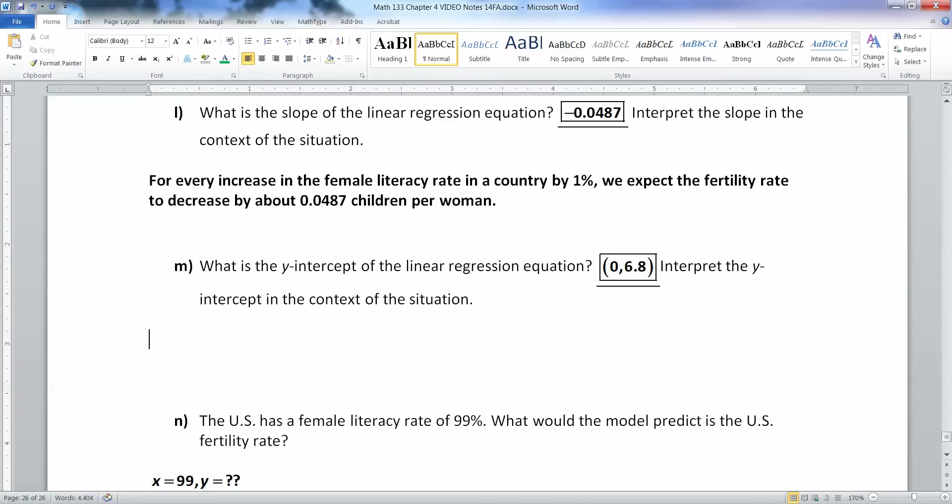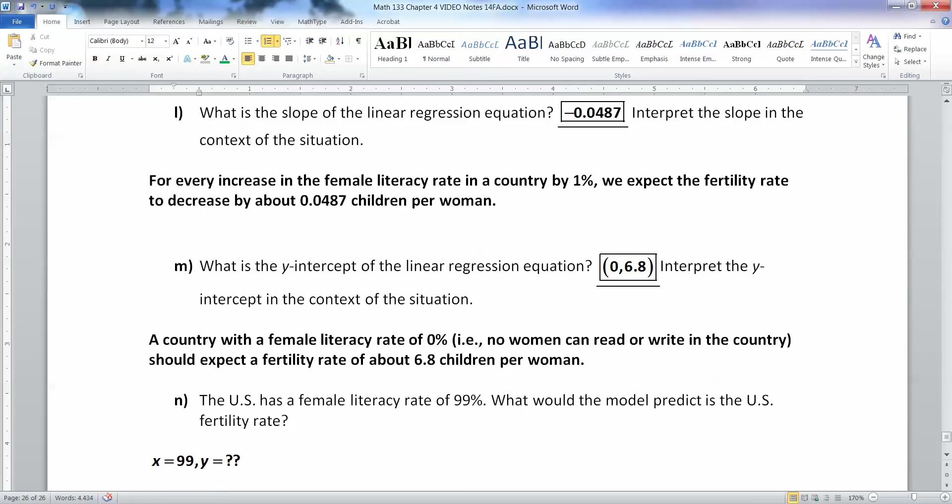Alright, now what about the y-intercept? That's saying that a country that has zero female literacy rate, so a female literacy rate of zero, should expect a fertility rate of about 6.8 children per woman. A country with a female literacy rate of 0%, which means no women can read or write in that country, should expect a fertility rate of about 6.8 children per woman. So realize what we're saying. We're saying if you have no women can read or write, they're going to have a lot of children. Now, it's not definitive like that, but that's what we're seeing. That's the trend. And then as we increase the female literacy rate, as more women can read and write in a country, then generally the less children they have. It's not perfect, but that's the general trends we're seeing.